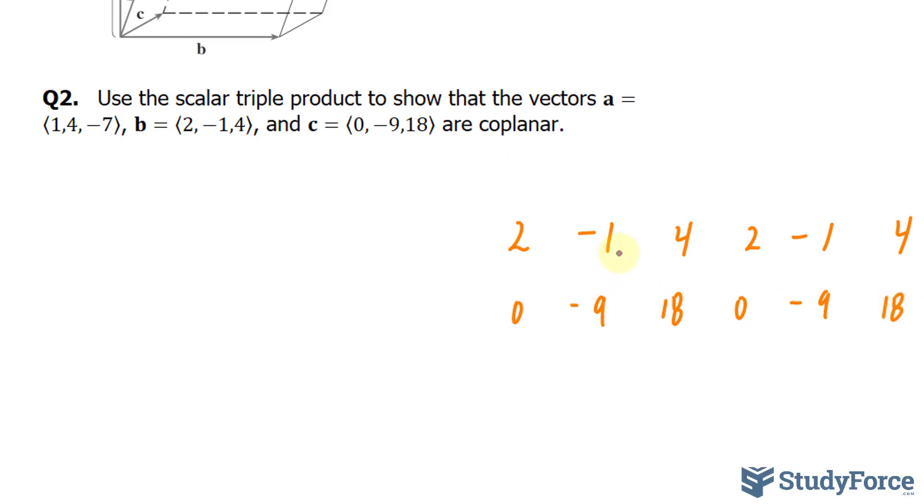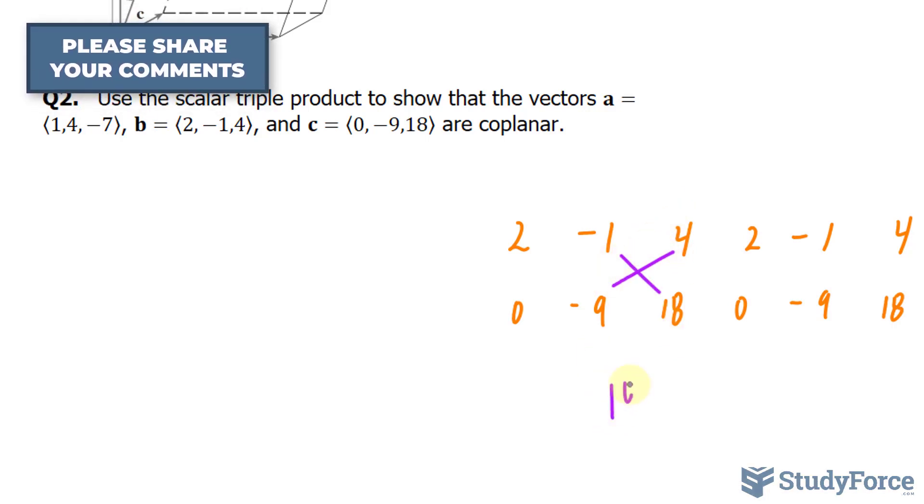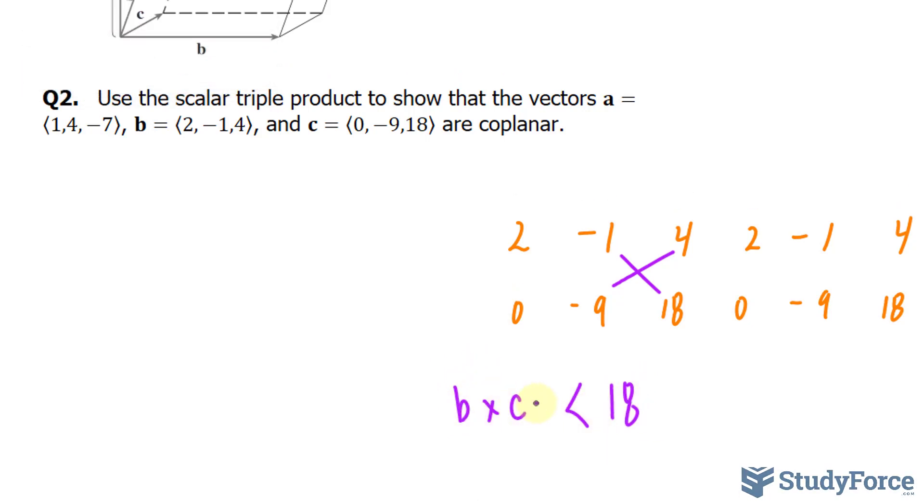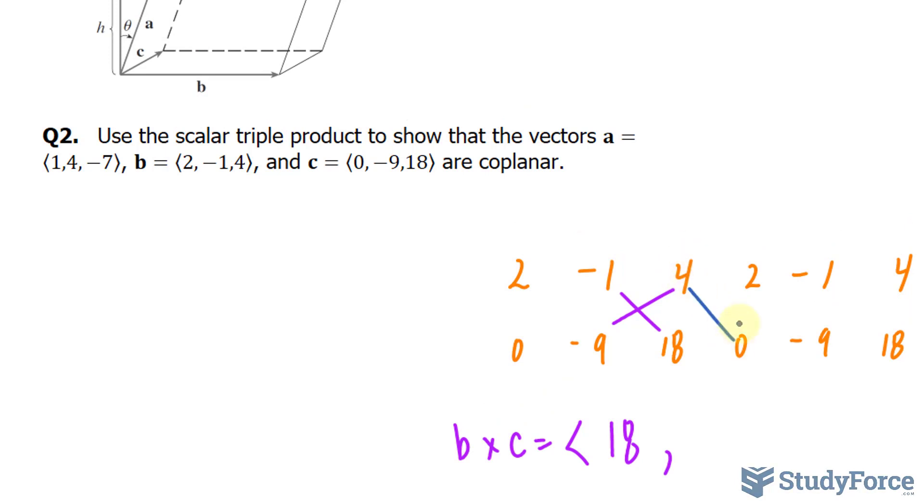Using the same pattern explained before, negative 1 times 18 is negative 18. Minus the product of these two, that's equal to 18. That's the x component of b times c. Next we'll take 4 times 0, that's 0, minus 18 times 2, that's negative 36.